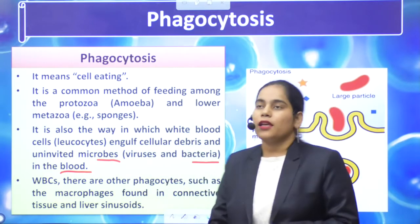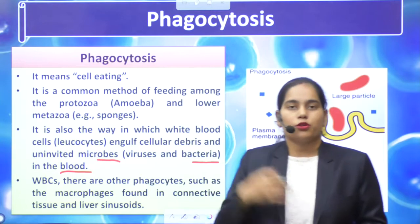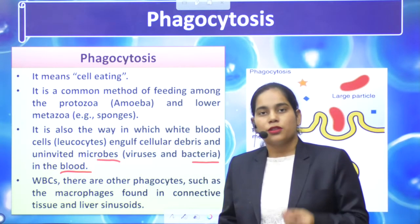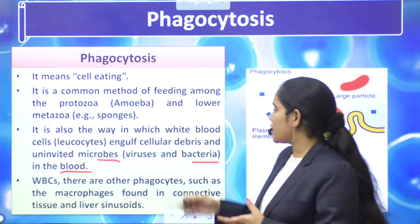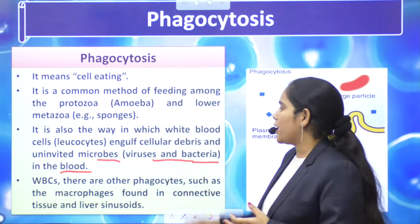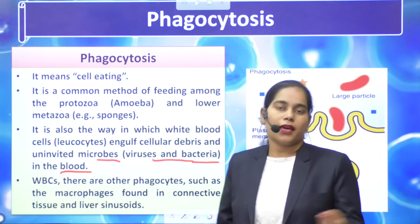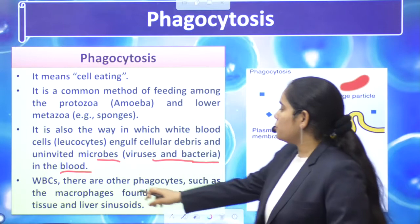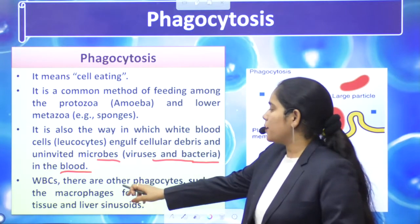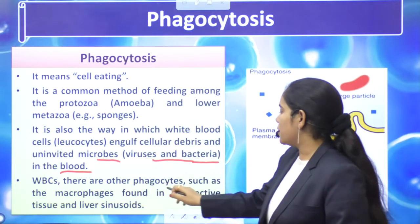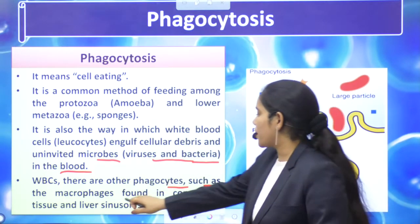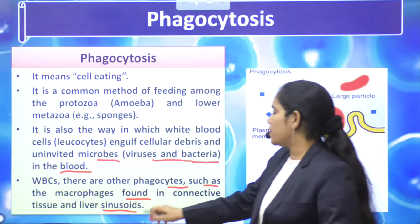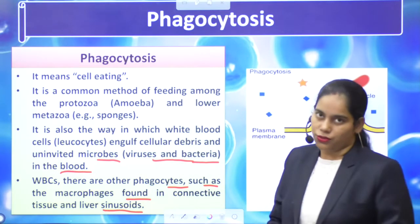It is also the way in which white blood cells — leukocytes — engulf cellular debris and uninvited microbes and bacteria in the blood. There are uninvited microbes in the body, very small like viruses and bacteria. WBC — white blood cells — carry out phagocytosis, as do macrophages found in connective tissue and liver sinusoids.